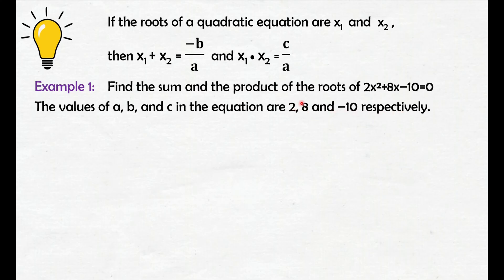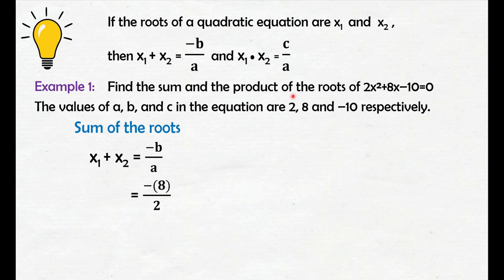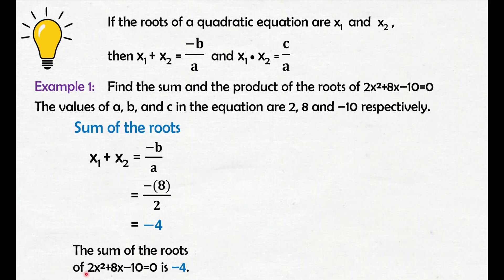We need the values of a, b, c to get the sum and product of the roots. So, let's solve the sum of the roots using the formula. Substitute the value of b and a: the value of b is 8 and the value of a is 2. Then divide: negative 8 divided by 2 is negative 4. So, the sum of the roots of 2x squared plus 8x minus 10 equals 0 is negative 4.